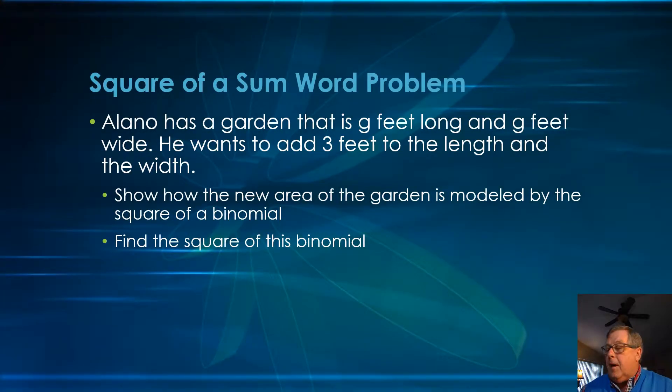Let's use what we've learned about the square of a sum and the square of a difference in a word problem. Alano has a garden that is g feet long and g feet wide. He wants to add three feet to the length and the width. Show how the new area of the garden is modeled by the square of a binomial.